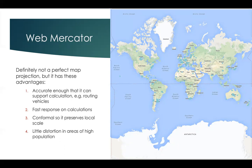This is because it's a conformal projection. It's pretty good at routing vehicles. It allows for fast response on calculations, which is why it's really great for all of these web tools that use it. But it's conformal, so it preserves local scale and things look like the right shape.